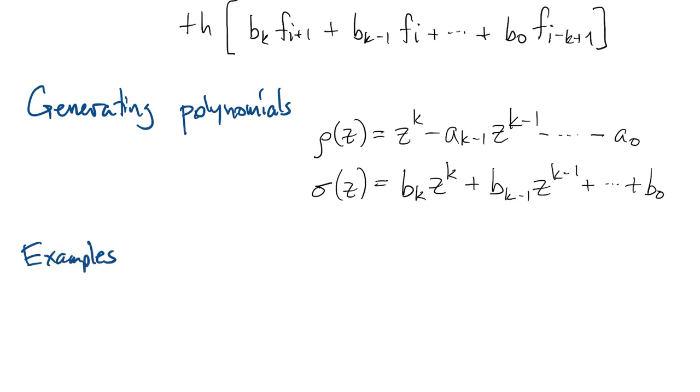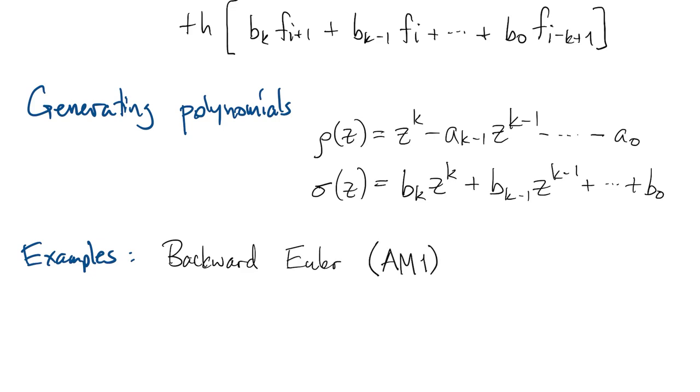For instance, going back to the backward Euler method, which is actually the Adams-Moulton method of order 1, rho of z is z minus 1, and sigma of z is just z.